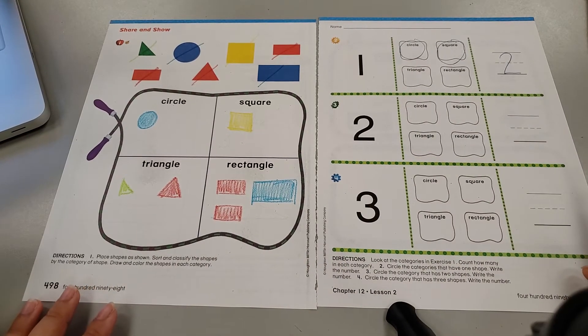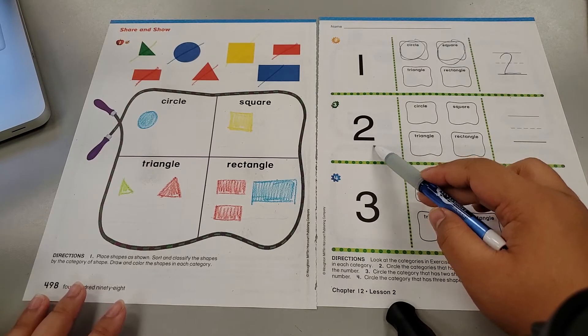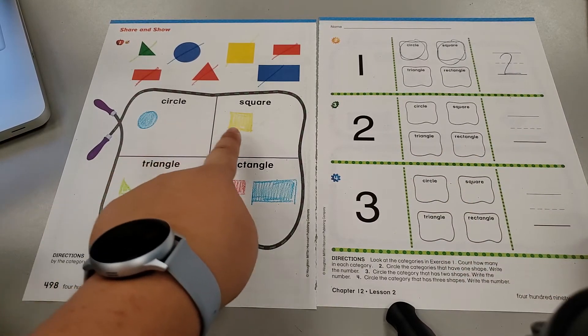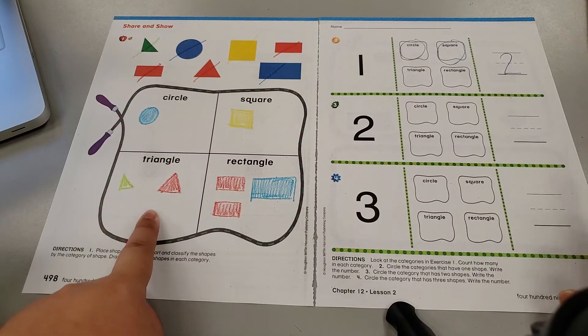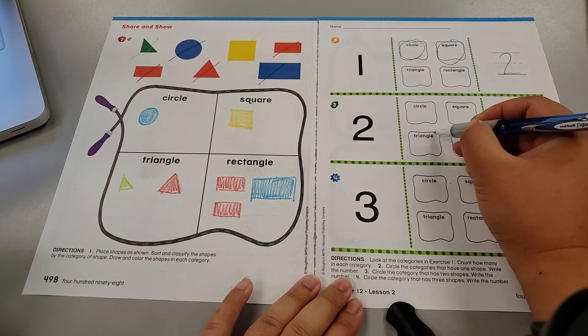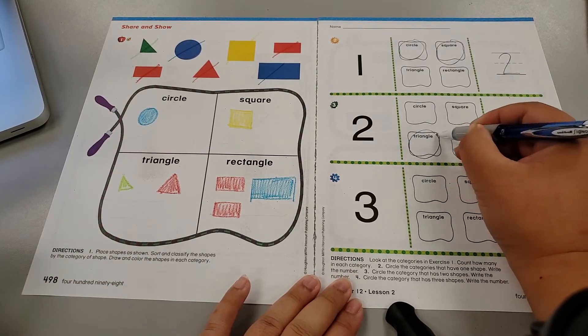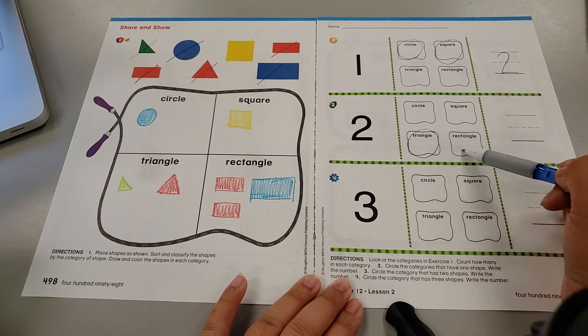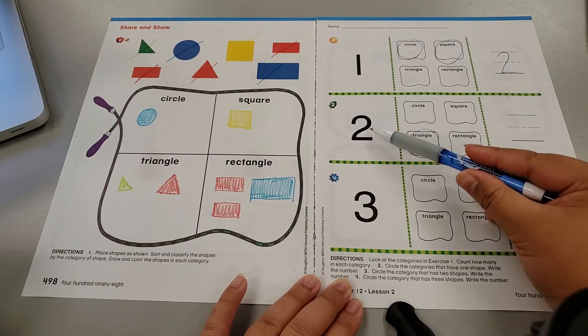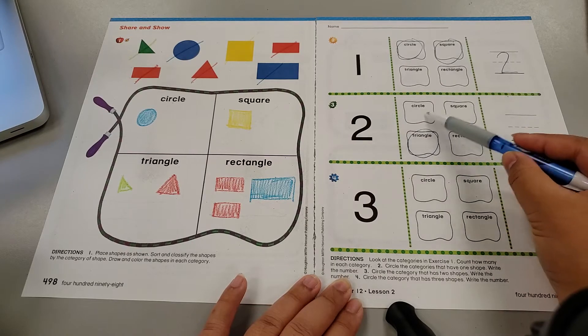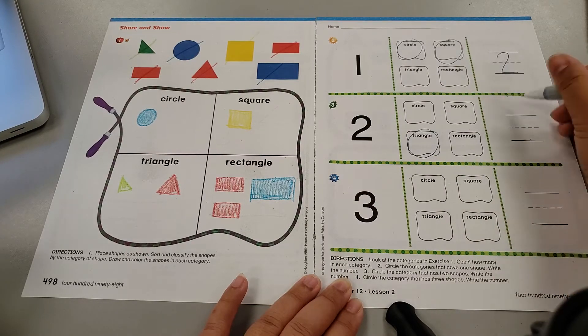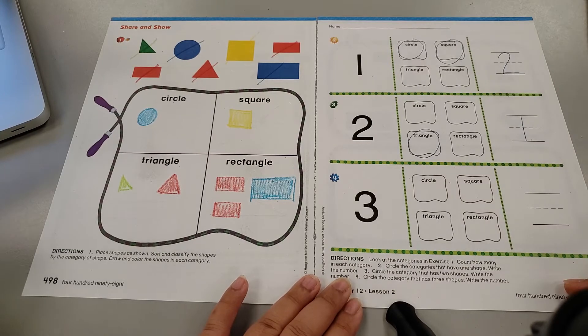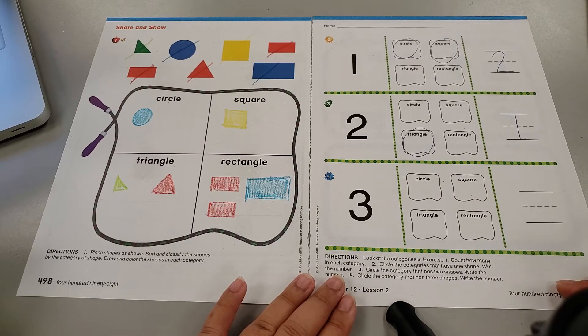Now I have to find categories that have two shapes. That was easy peasy. The triangle has two shapes. So I will circle my triangle category. Now for the line. How many categories did I circle that have two shapes? Just this one. There is only one category with two shapes.